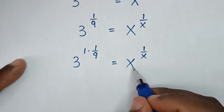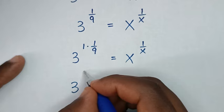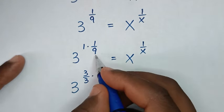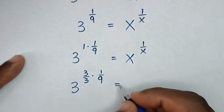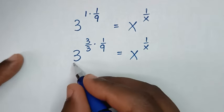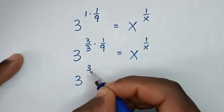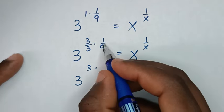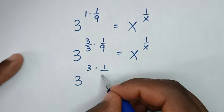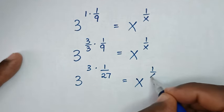Now from this side, to make it look like this, it will be 3 power of 1. This 1 is the same as 3 over 3 — since 3 divided by 3 is 1 — then times 1 over 9. So it will be 3 power of 3 alone here, placed on one side, then times 1 over 3 times 9. Since 3 times 9 is 27, it is equal to x power of 1 over x.